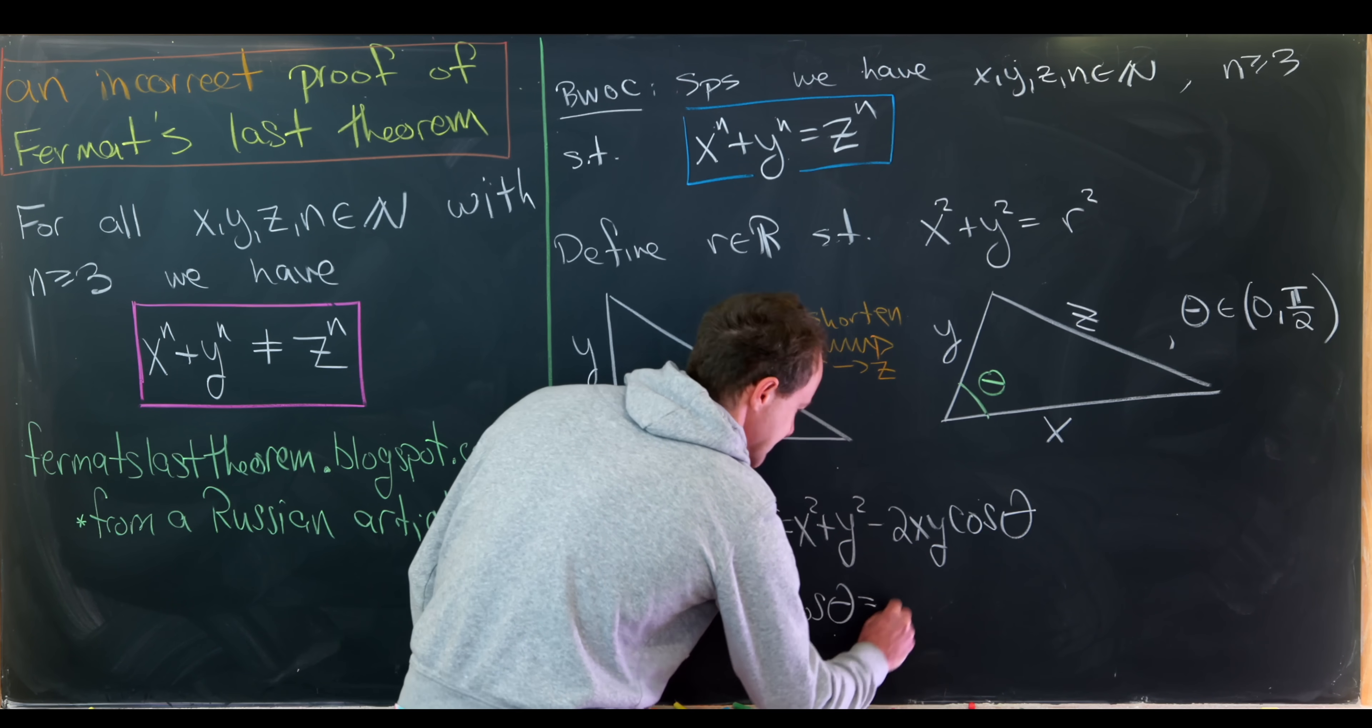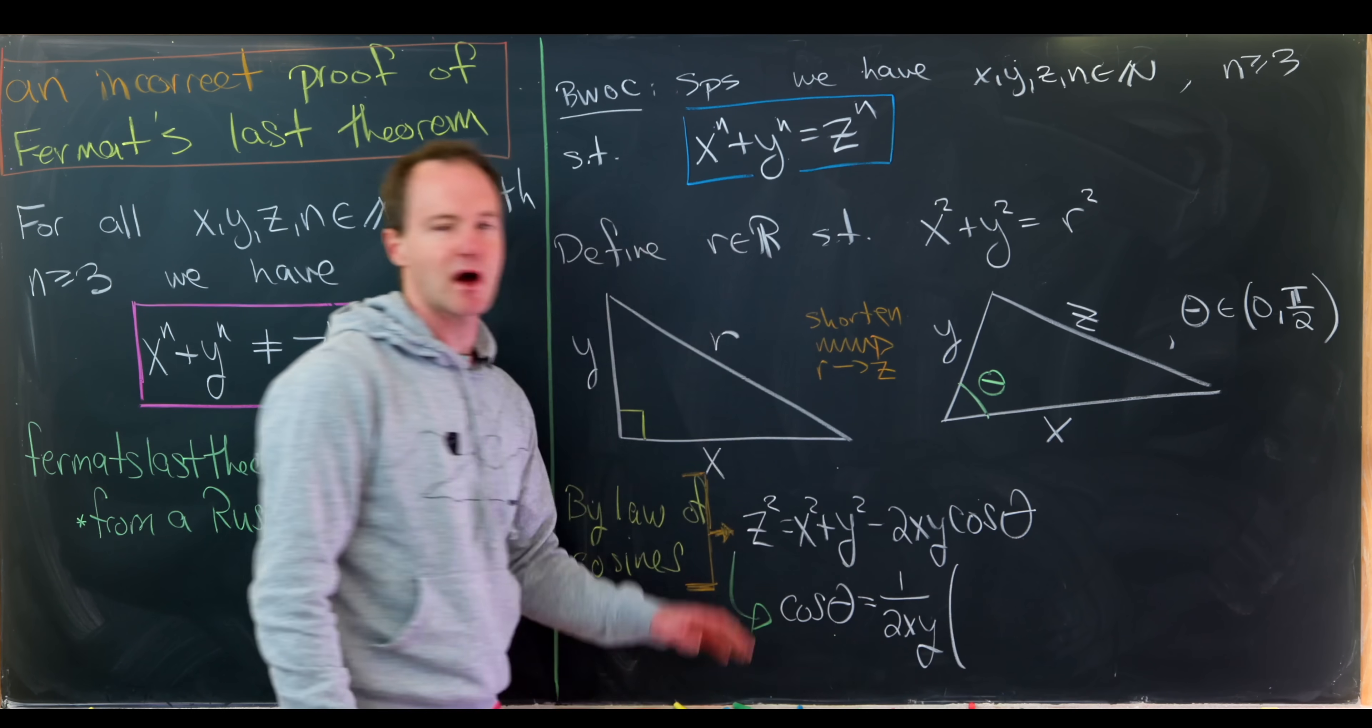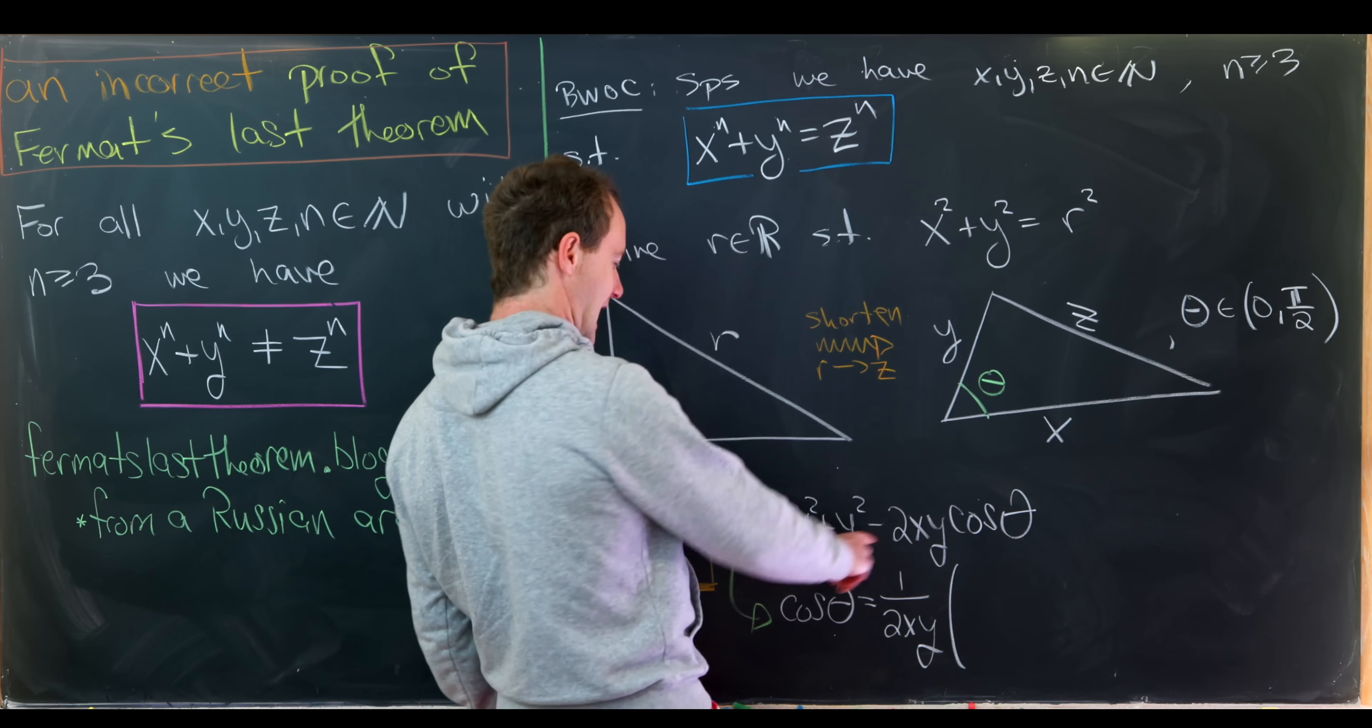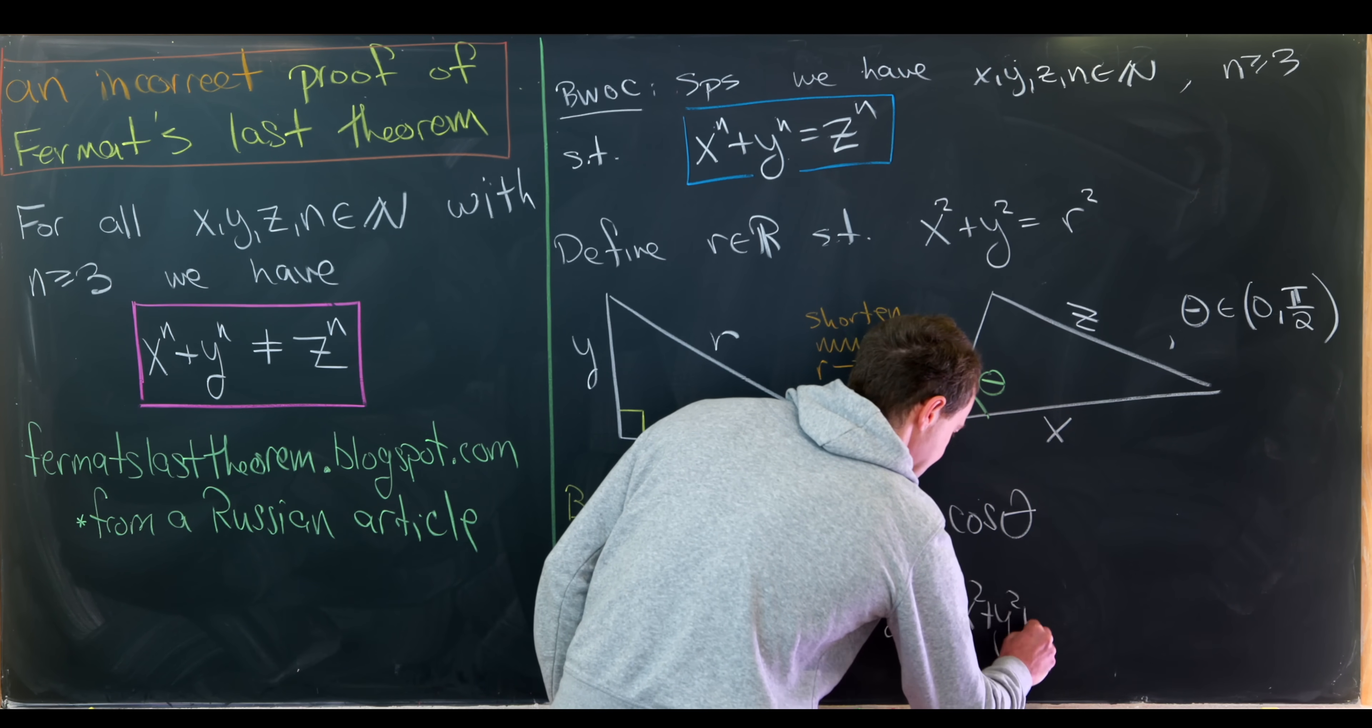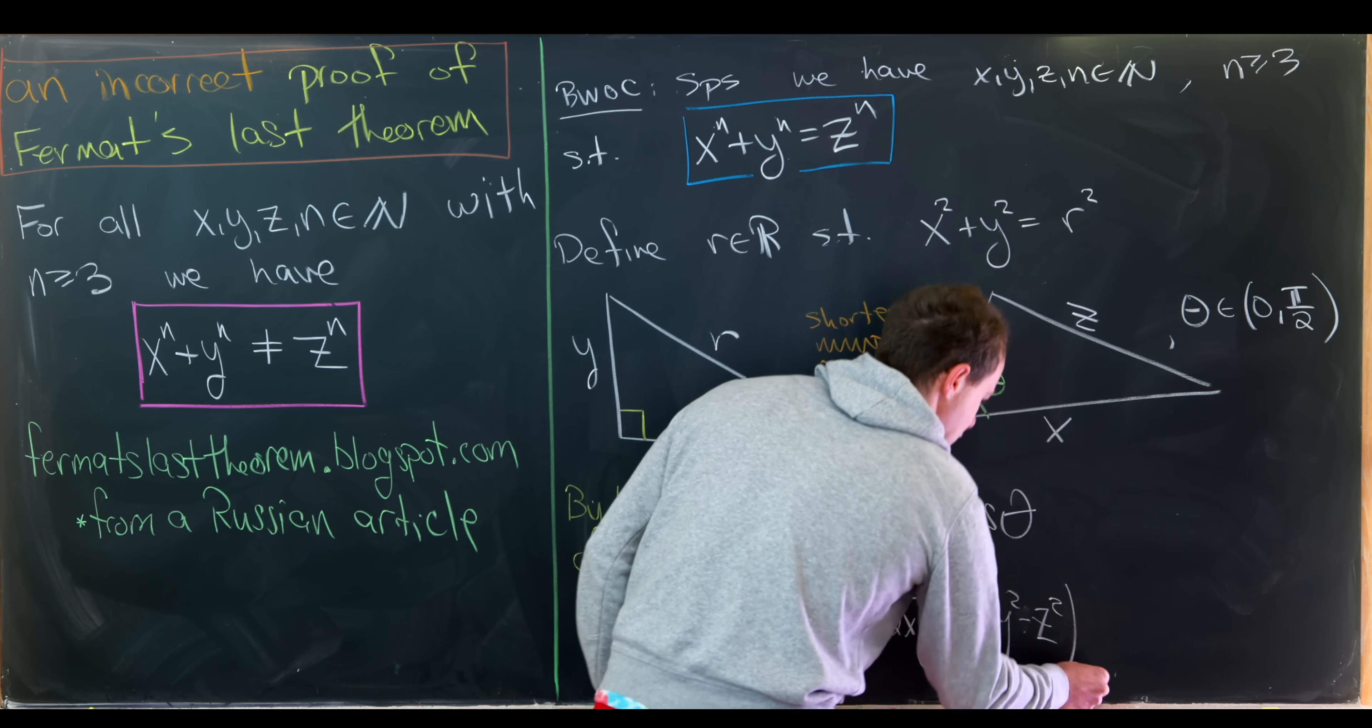So we can pretty easily solve this for cosine theta and we get the following object. We'll have cosine theta is equal to 1 over 2xy. So x and y are both positive, so it's okay to divide by them. And then after that, we'll have x squared plus y squared minus z squared.